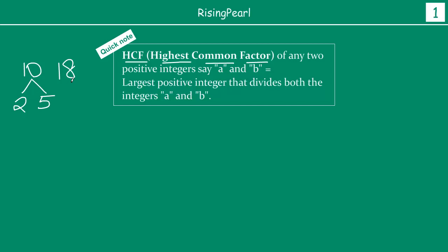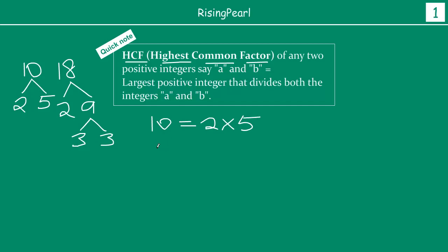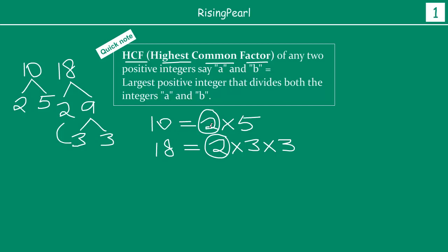For 10, the two prime factors are 2 and 5, so 10 = 2 × 5. Similarly, 18 = 2 × 3 × 3. Looking at both, the number 2 is the common factor between 10 and 18, and since it is the only common factor, it is also the highest common factor.